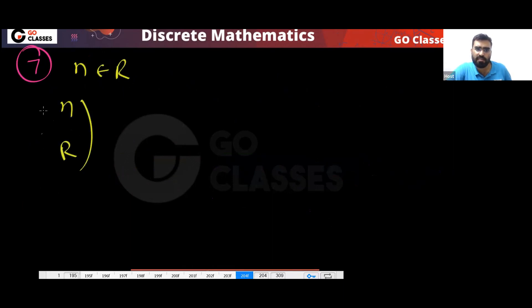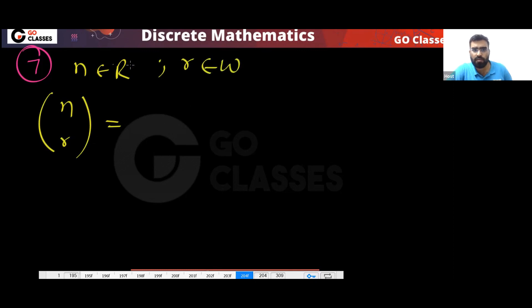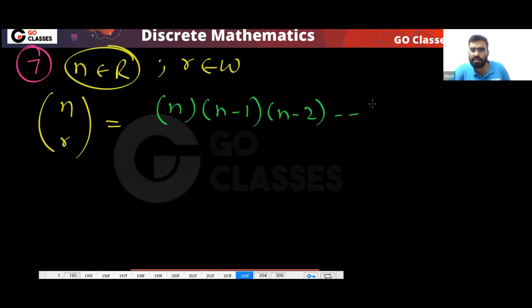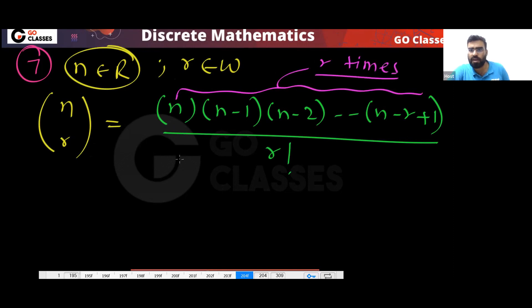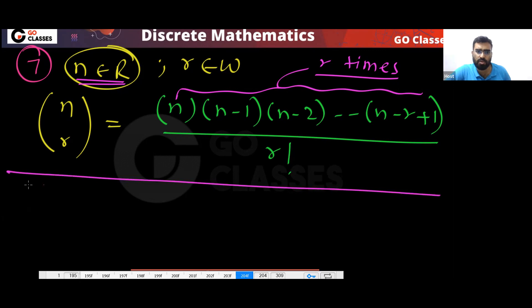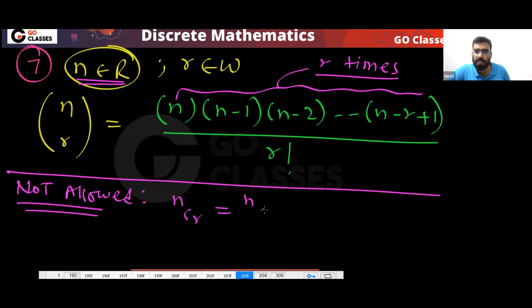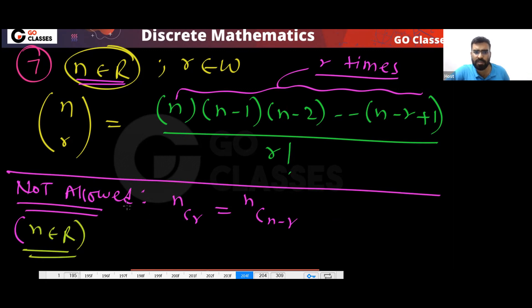The seventh point is the extended binomial coefficient. When n belongs to real numbers R, then nCr is computed by writing r terms starting from n and dividing by r factorial. Note: when n is a real number, the identities like nCr = nC(n−r) and (A+B)^n are not allowed.